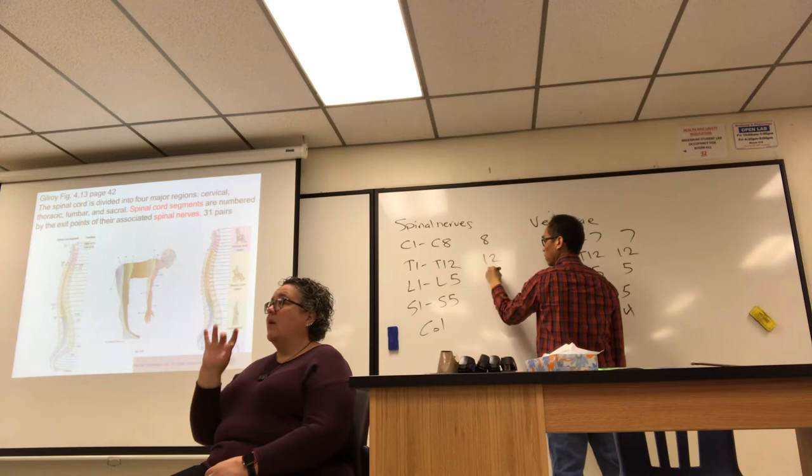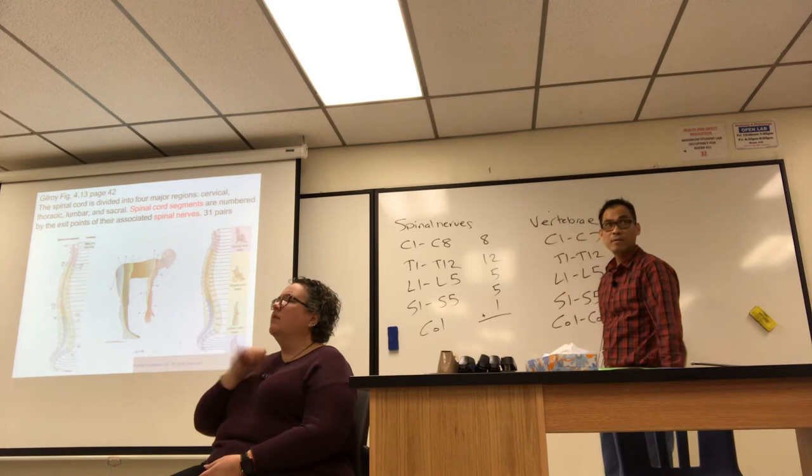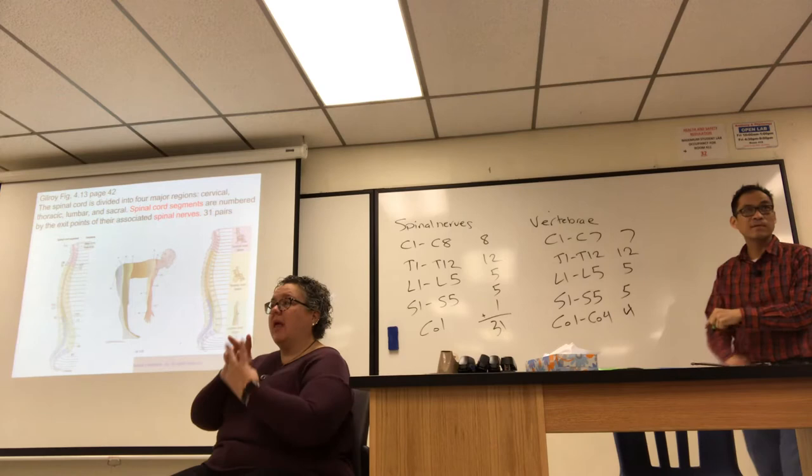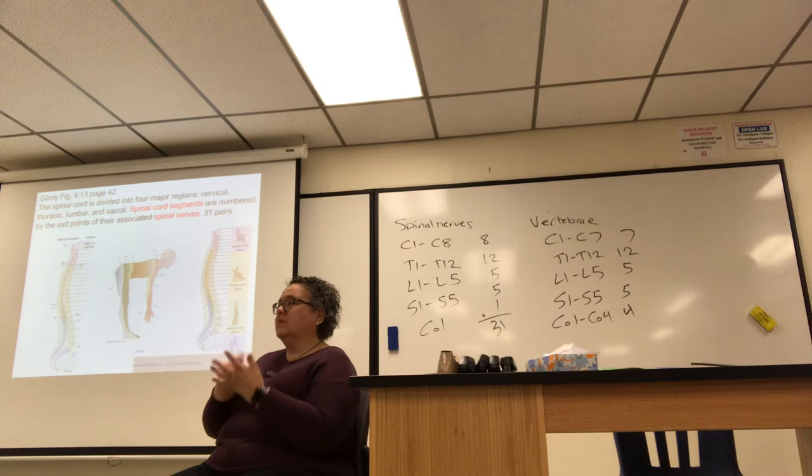Adding up 8, 12, 5, 5, and 1 gives 31 pairs of spinal nerves. Since they are pairs, there are actually 62 individual spinal nerves total.